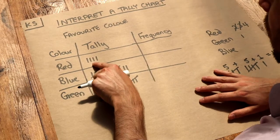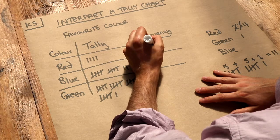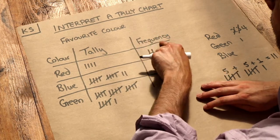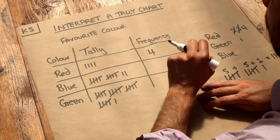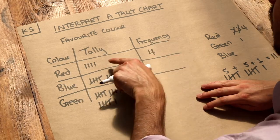That one's easy. We've got four people who like red because there are one, two, three, four marks. So you put a frequency of four. Remember, frequency just means how many people chose that particular thing.